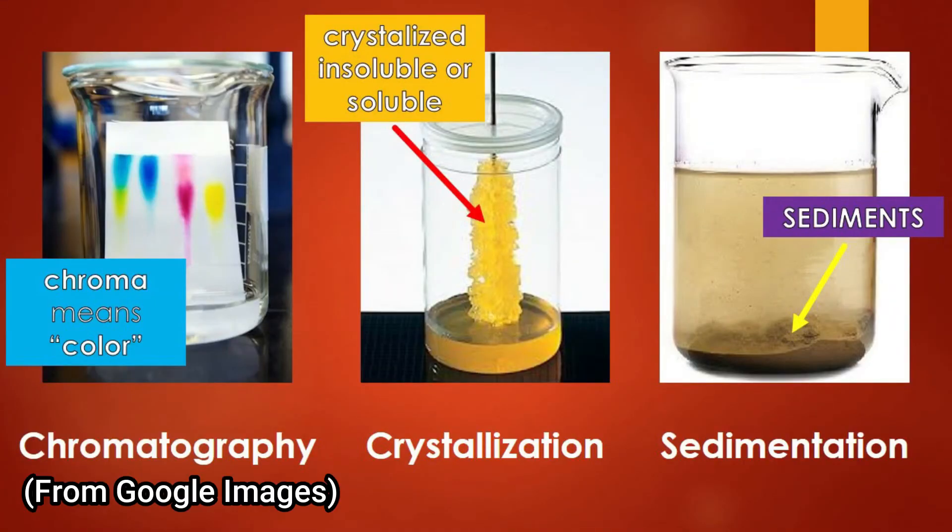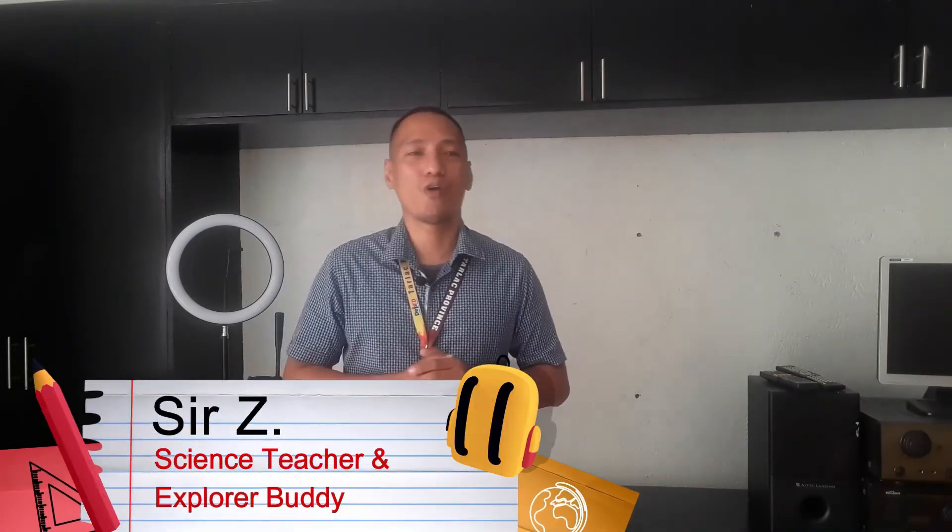Those are the nine different methods for separating mixtures. We only covered nine that are more common and familiar to us. There are many others, like chromatography, crystallization, and sedimentation — but those are for a different video. That wraps up our discussion for this lesson. I hope you were able to follow and understand the explanations and examples given. Once again, this is Sir Z, your science teacher and explorer buddy. See you all again soon. Good luck with your home studies. God bless. Stay safe. Class dismissed.